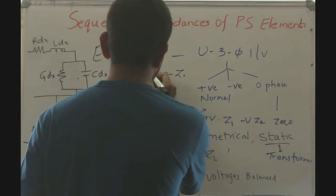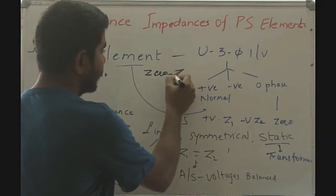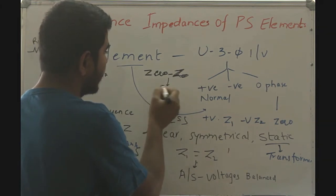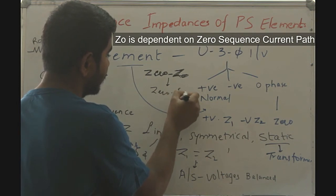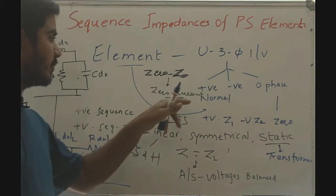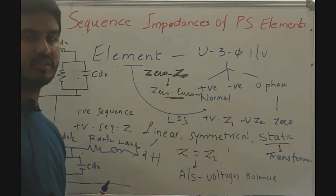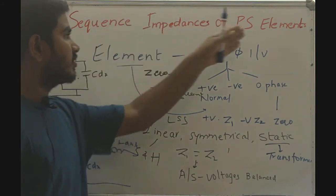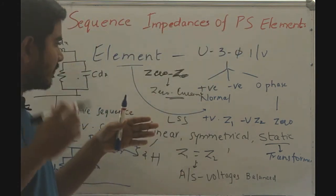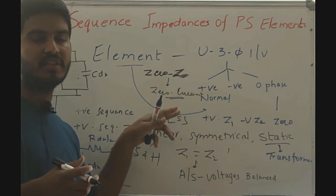If we consider the zero sequence impedance Z₀, this zero sequence impedance depends on the path taken by the zero sequence current. As the path taken by this zero sequence current is different from that of the positive and negative phase sequence currents, the zero sequence impedance will be different from the positive and negative sequence impedances. We shall now look at the sequence impedance of each power system element.